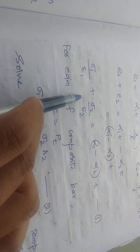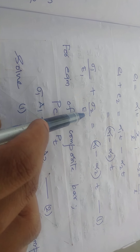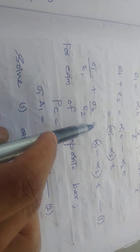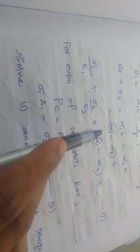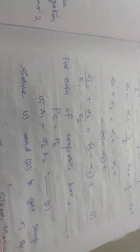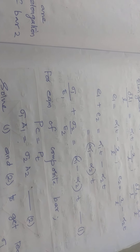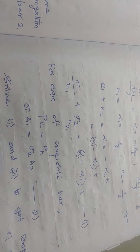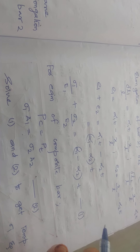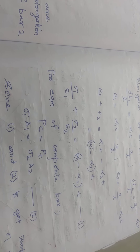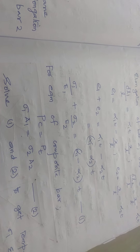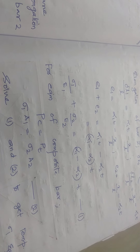You will get a relation between sigma 1 and sigma 2, and substituting that relation, you can solve for sigma 1 and sigma 2. That is how you calculate the temperature stresses for composite bars.